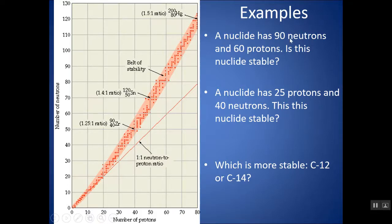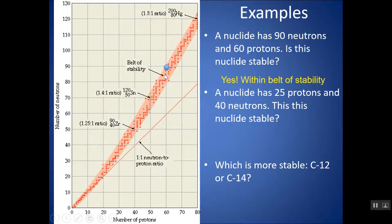A nuclide with 90 neutrons and 60 protons: go to 60 on the proton axis and 90 on the neutron axis. It falls within the belt of stability, so it is stable — it is not a radioisotope, it is not radioactive, and it will not decay.